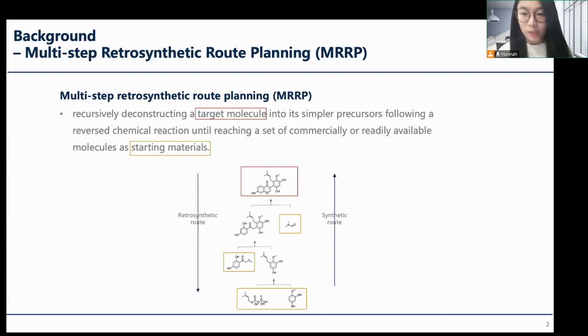The synthesis of chemicals is central to chemistry. A critical step towards successful and efficient synthesis of chemical molecules is to identify feasible synthetic routes. One of the most widely used methods for planning synthetic routes is multi-step retrosynthetic route planning. It refers to recursively deconstructing a target molecule into its simpler precursors until a set of commercially or readily available molecules is reached as starting materials. Then the synthetic routes for the target molecule can be obtained by reversing the derived retrosynthetic routes from MRRP.